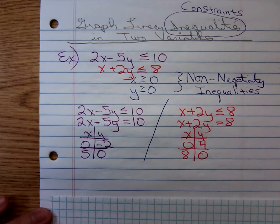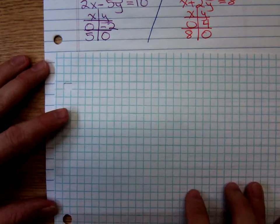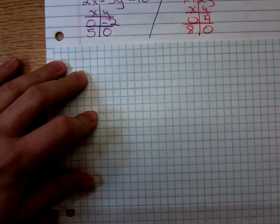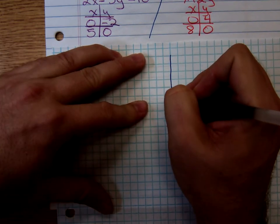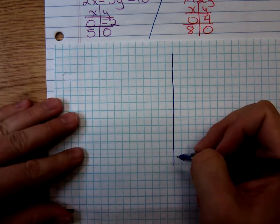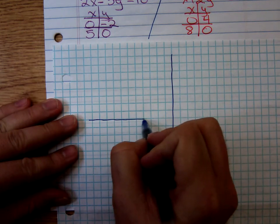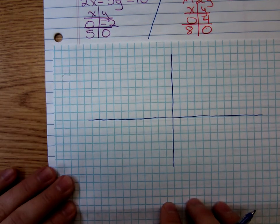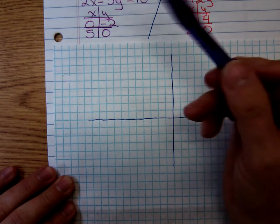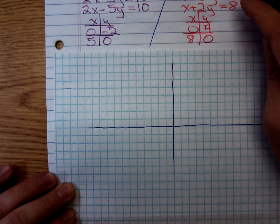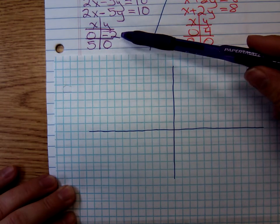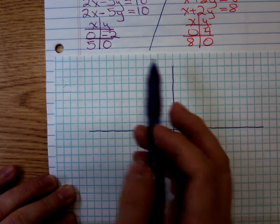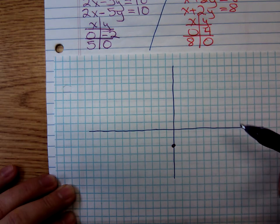So I'm going to go down here to my graph paper and I'll draw my x, y grid. And we'll graph the first boundary line. 0, negative 2. 0, down 2. And then 5, 0. 1, 2, 3, 4, 5.